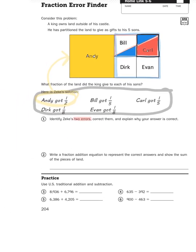So that means Bill, Carl, Dirk, and Evan all got the same amount of space. So their fractions should be the same as well. We see that Bill and Carl apparently got a fifth of the total, according to Zeke, and then Dirk and Evan got an eighth, according to Zeke. So identify Zeke's two errors, correct them, and explain why your answer is correct. Knowing what we now know, based on what I just pointed out with my illustrations, how would you explain Zeke's errors? I have every confidence that you will be able to figure it out. You just need to identify what was wrong, and then write a fraction addition equation to represent the correct answers and show the sum of the pieces of the land.